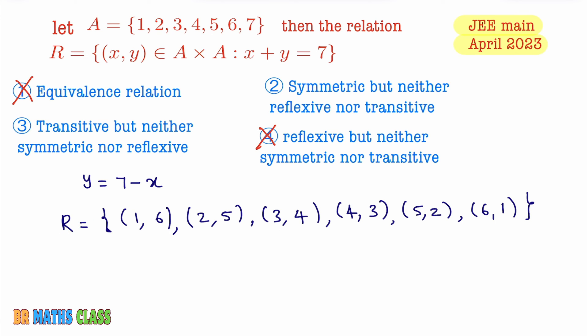So you observe this third option. Third option they are saying neither symmetric nor reflexive. Third option is saying that it is not symmetric. So you can avoid this third option. So obviously our right option is this second option. Second option is saying it is symmetric. Yes it is symmetric. We checked. But neither reflexive, it is not reflexive nor transitive.